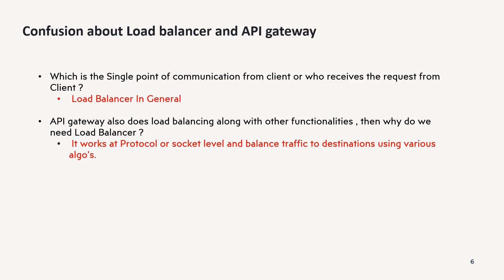Second: why do we need a load balancer if the API gateway also has load balancing capabilities? The load balancer does load balancing at the application level — distributing requests coming to your application across your servers. Once the request goes to the API gateway, the API gateway also does load balancing at the microservice level. If one microservice has 10 instances, it load balances at the routing level. Both have similar capabilities but operate at different layers — that is why we need both.